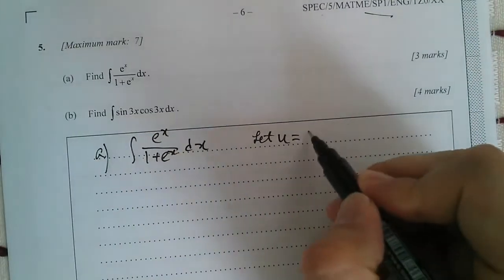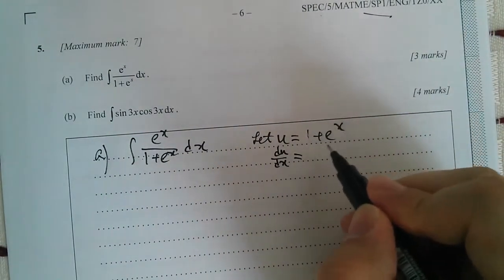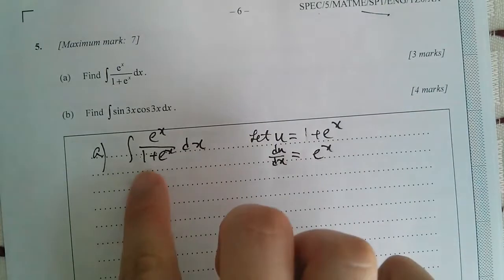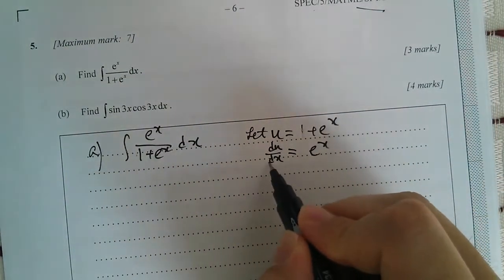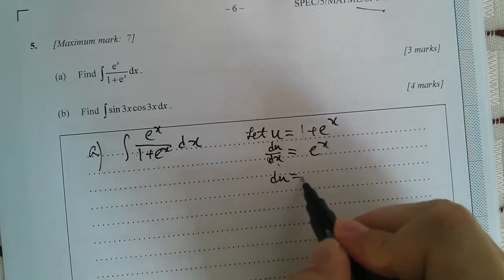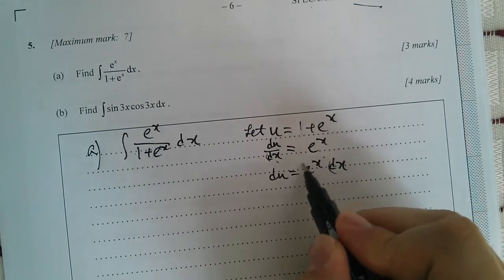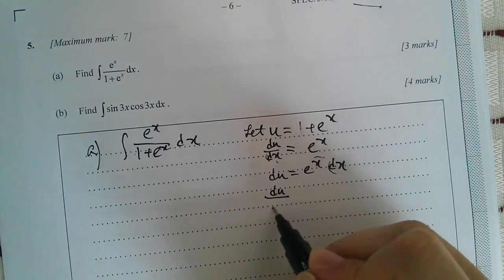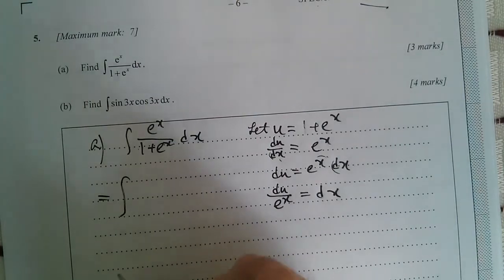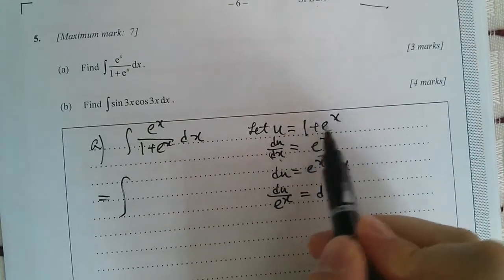We choose u to be 1 plus e to the power of x. What we need to do is differentiate both sides with respect to x. Differentiate 1 is zero, differentiate e^x gives you e^x. This is what I mean: I differentiate this, I get the other part, that's why I will choose this as my u. What we need to do next is make dx the subject. We multiply dx to the other side, then we make dx the subject. We need to divide by e^x, so dx = du over e^x.